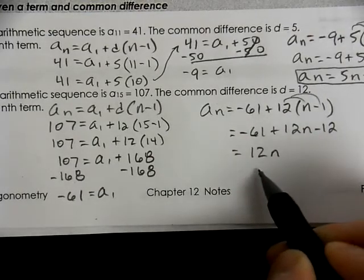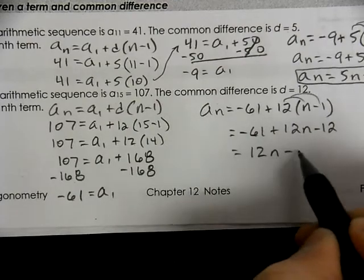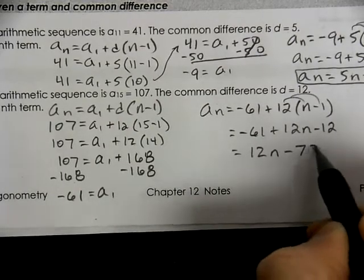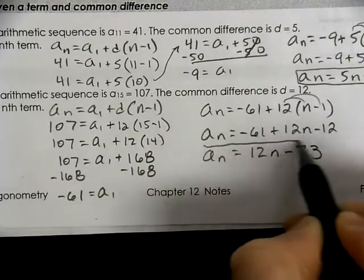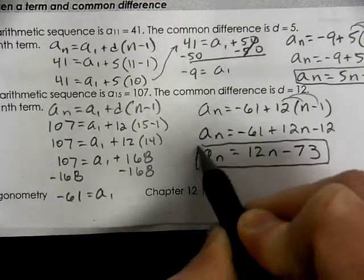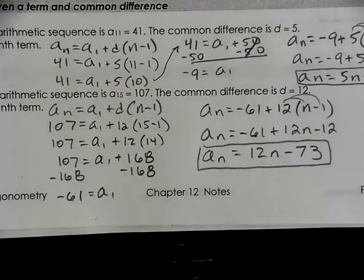I always put the n terms first. So our a of n is going to be 12n minus 73.